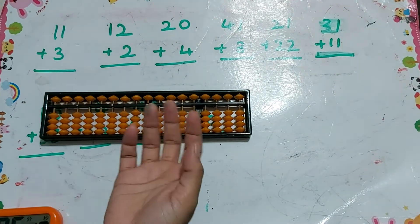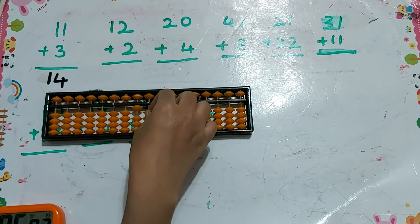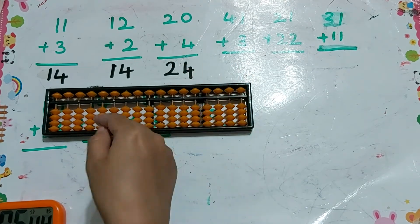Now I will solve a few more problems using direct method. 11 plus 3, the answer is 14. Next, 12 plus 2, the answer is 14. Next, 20 plus 4. Keep the 4 in the 10's place and 1 in the 1's place. Then plus 3.